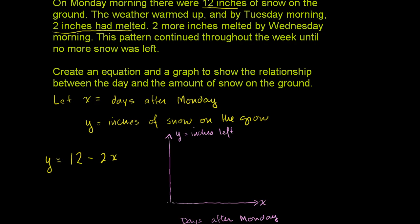We have 0 days after Monday, 1, 2, 3, 4, 5, and 6. And then on Monday, which is exactly 0 days after Monday, we have 12 inches on the ground. So we have 12 inches on the ground right there.